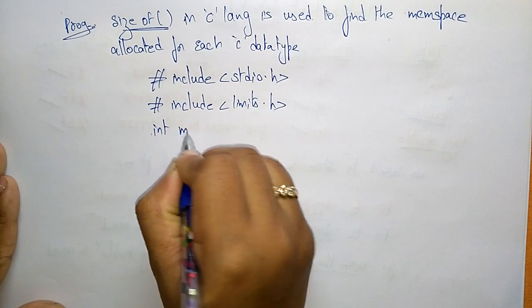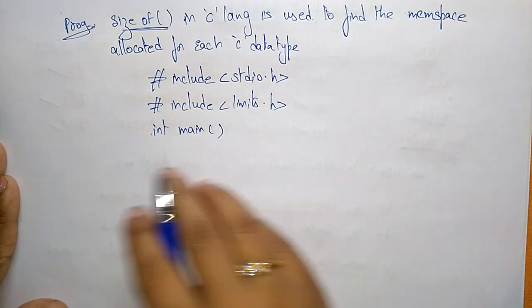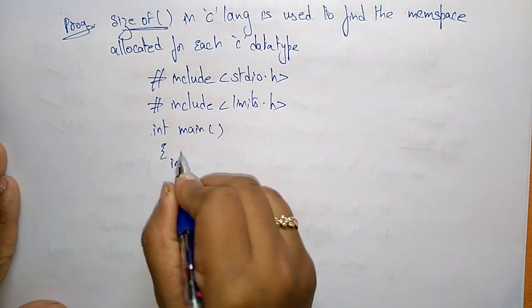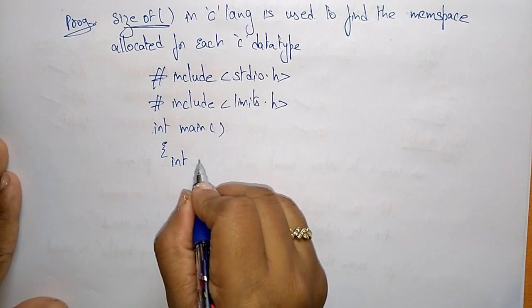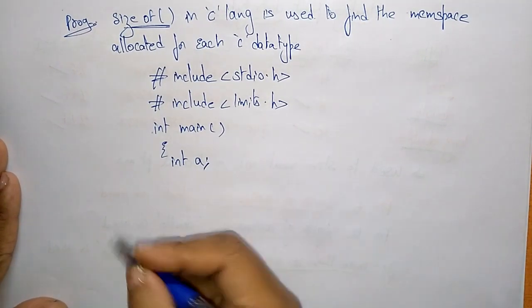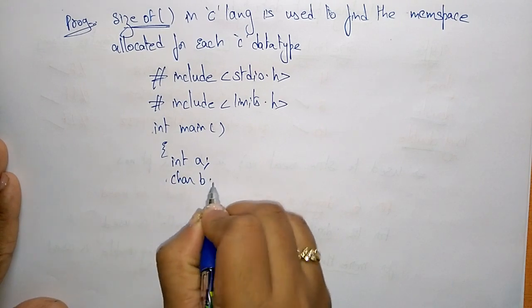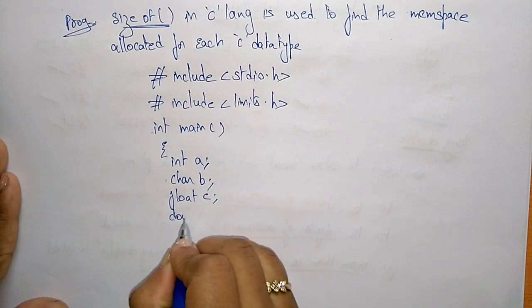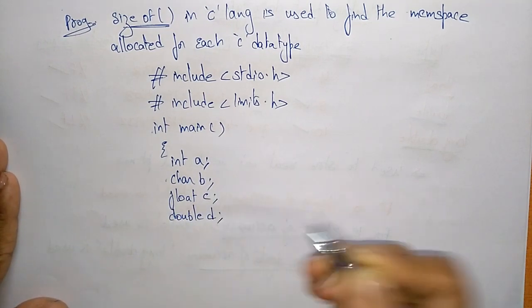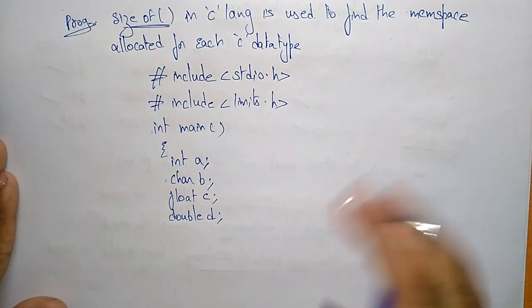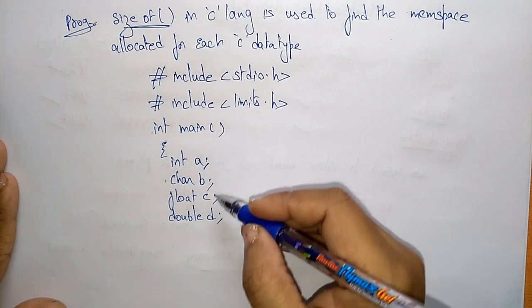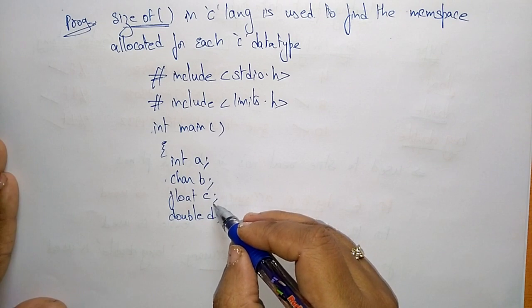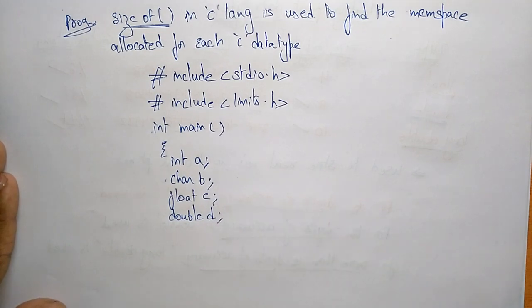Now coming to int main — int main means the return type should be an integer value. I am declaring the data types: int a, char b, float c, double d. So I have taken four data types with four variables: a is integer, b is character, c is float, and d is double.